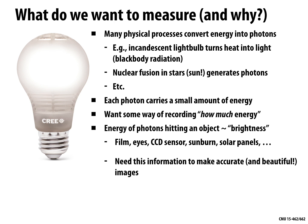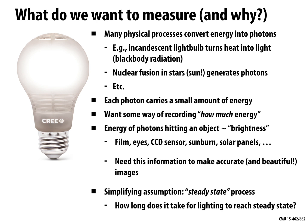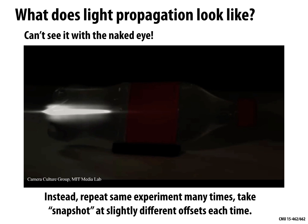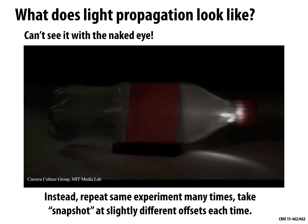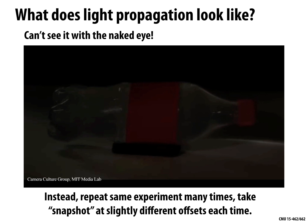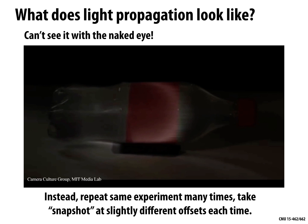Another simplifying assumption we're going to make is that light transport is a steady-state process. When you flip on the lights in a room, how long does it really take for light to reach a steady state? Initially there's light traveling from sources, bouncing off walls, but very quickly things settle down. We can look at how fast light propagates — this is a recent experiment showing a single packet of light traveling through an object, something you couldn't possibly see with the naked eye.